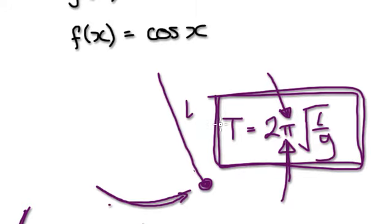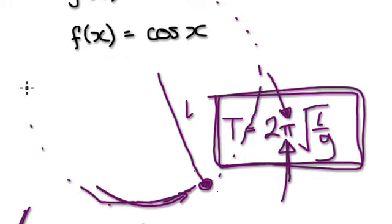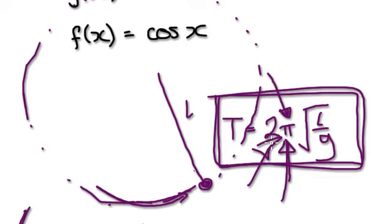The circle is actually the path of the pendulum. Whenever you see a formula involving pi, there's normally a circle behind it. Here, a pendulum is following part of a circular path.